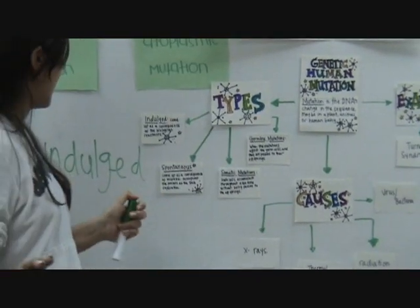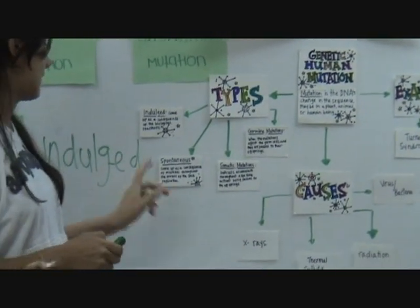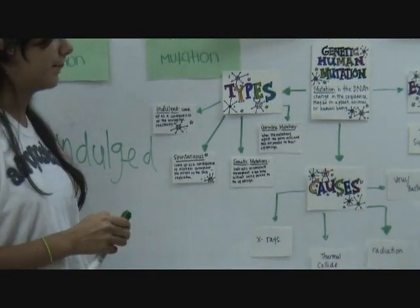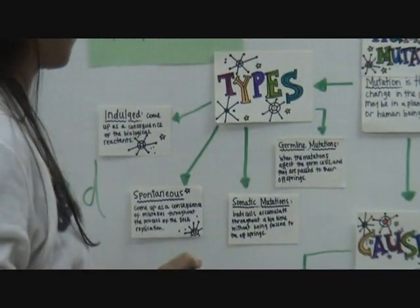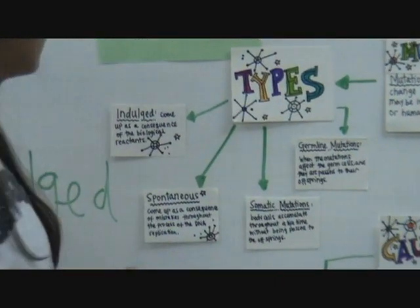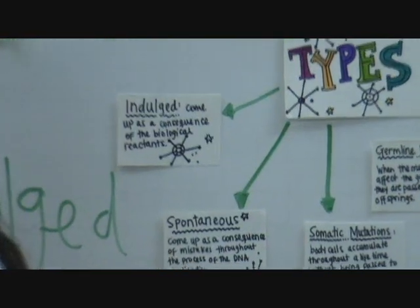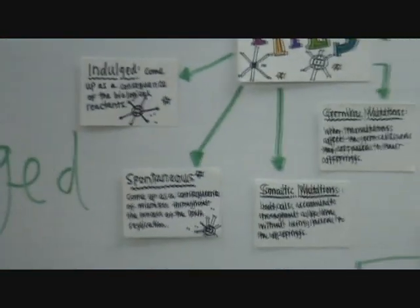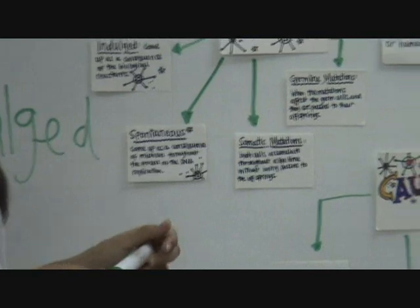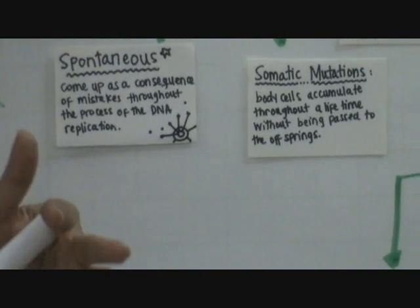Obviously, as a change or mistakes in the concept of DNA, there are somatic mutations that happen when the body cells accumulate throughout lifetime. Remember that we spoke about one division — that was single-cell mitochondria.